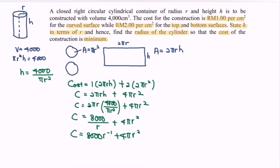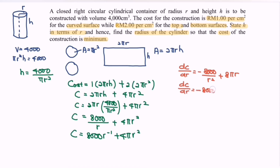Next, we differentiate C with respect to r. The first derivative is dC/dr = −8000/r² + 8πr, which can be rewritten as dC/dr = −8000r⁻² + 8πr.